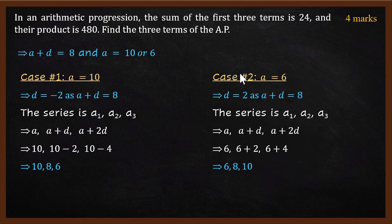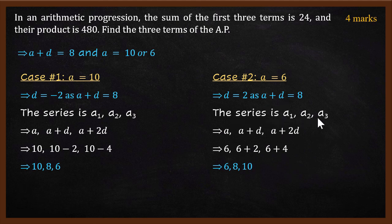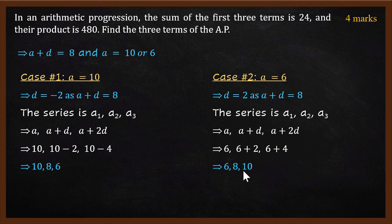Case 2: a equals 6. Since a plus d equals 8, d equals 2. Expanding the series: the first term is 6, the second term is a plus d equals 8, and the third term is a plus 2d equals 10. So the sequence is 6, 8, 10. If you add all of them you get 24, and if you multiply them you get 480. This is also correct.